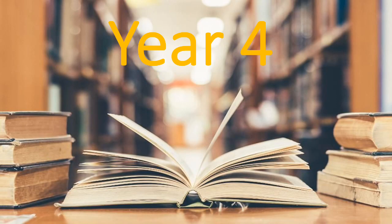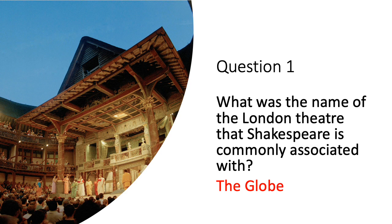On to the answers for year four about our authors. Question one: what was the name of the London theatre that Shakespeare is commonly associated with? That was the Globe. The Globe Theatre that stands now was built using a thousand oak trees from English forests and 6,000 bundles of reeds from Norfolk for the thatched roof. It is actually the third version built.